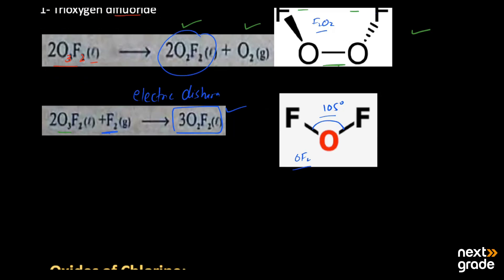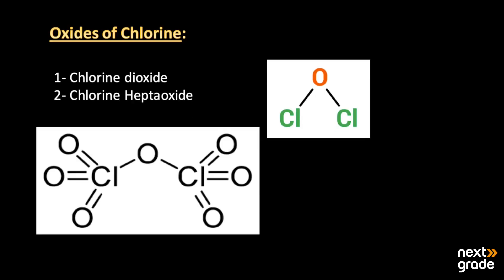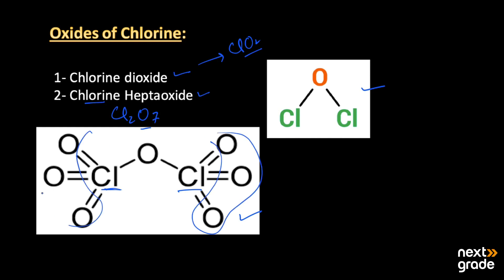Moving to chlorine, it can exist in several oxide forms. The main ones are chlorine dioxide (ClO2), meaning two oxygen atoms are present, and chlorine heptoxide (Cl2O7), meaning seven oxygen atoms are present. The structure of chlorine heptoxide shows two chlorine atoms with three oxygen atoms on each side and one central bridging oxygen atom.